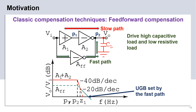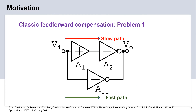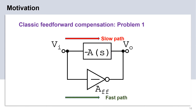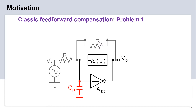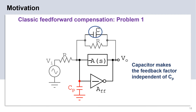But the conventional feed-forward architecture has several drawbacks which limit its usefulness. This slide shows the conventional feed-forward architecture. For simplicity of analysis, let us represent the slow path by an equivalent transfer function as shown in the slide. A general problem for any feedback circuit is the presence of the parasitic capacitor CP at the virtual ground node. The parasitic capacitor CP introduces a pole in the open-loop gain response of the system. A capacitor C can be added to the feedback path to cancel the effect of the parasitic capacitor CP. For proper cancellation of the pole, C should be equal to CP.